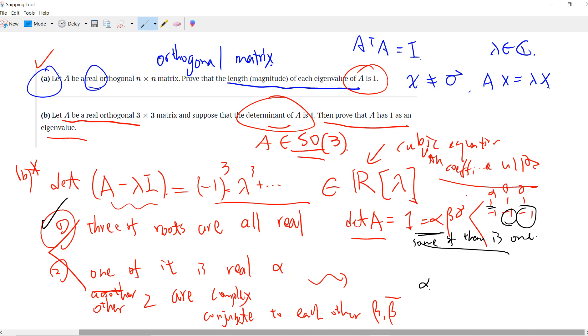For the second case, we have alpha times beta times beta bar equals 1. But we know that the magnitude of each eigenvalue is 1. So beta times beta bar, which is the norm of beta squared, equals 1. Therefore, alpha must equal 1.